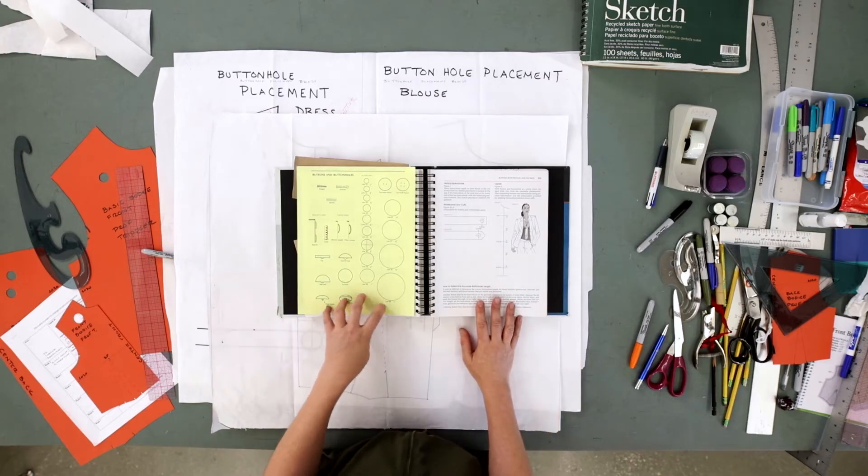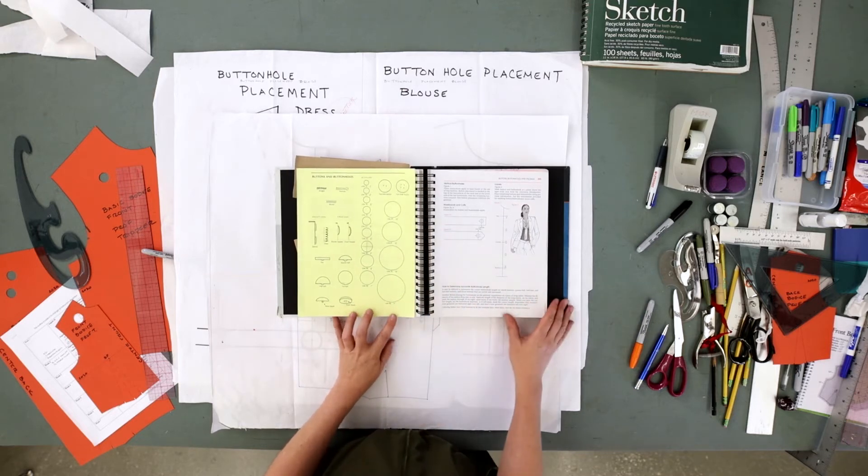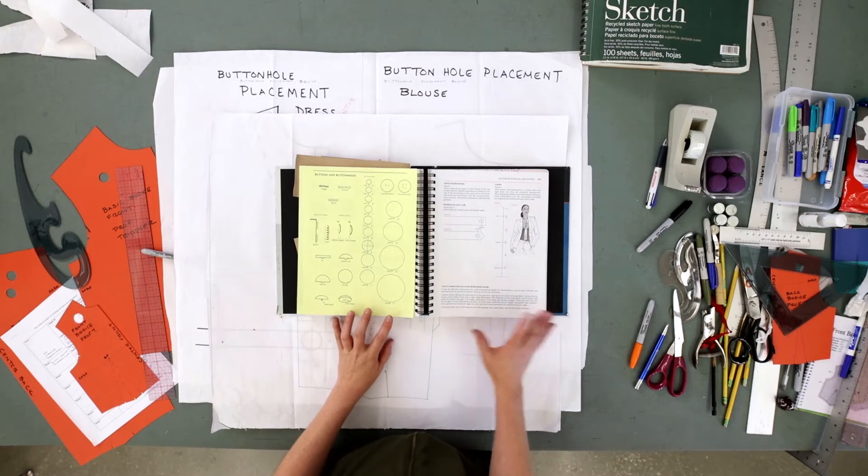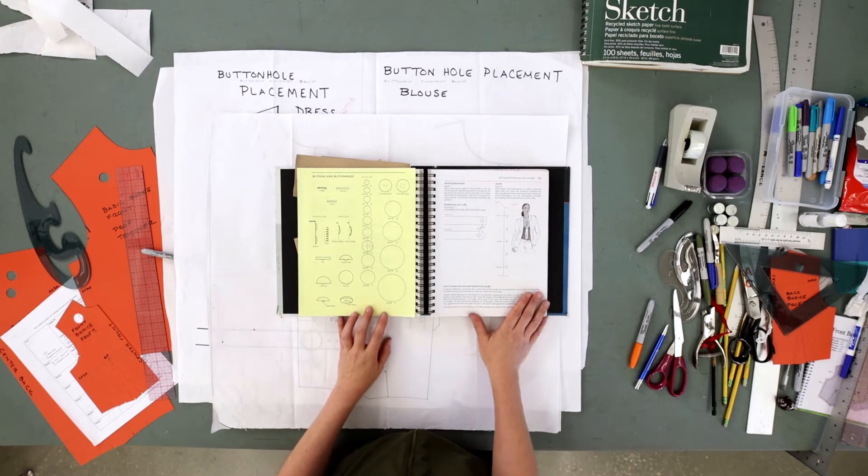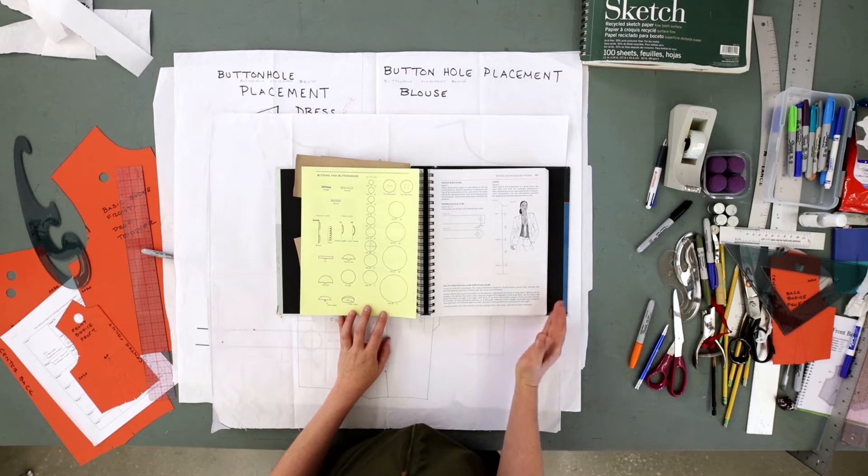We're going to take a pause for a moment in the flow of our Chapter 5, and then we'll go back to Chapter 5, Designing with Darts, because I want to talk a little bit about buttons for a moment, because you're probably wondering, some of my garments aren't cut on the fold, I need to sew a button in.